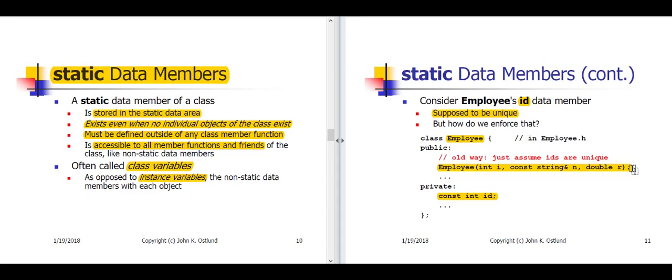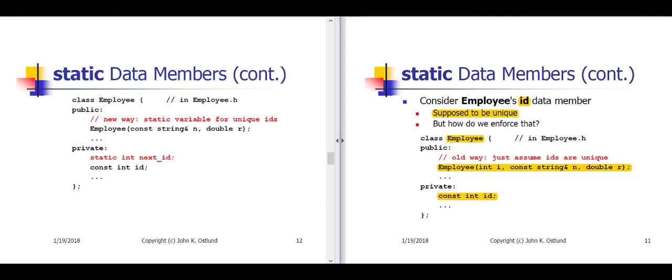This is not a great design. Ideally, the employee class itself would control ID numbers for employees and ensure that each employee does, in fact, get a unique ID number. So we're showing on slide 12 the use of a static data member to help us do exactly this.